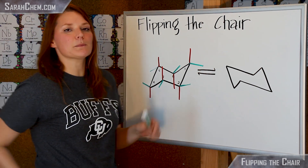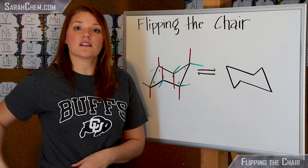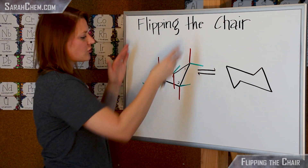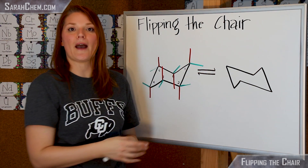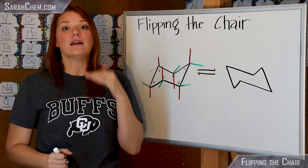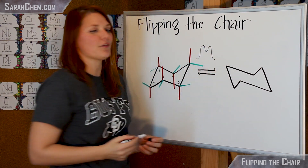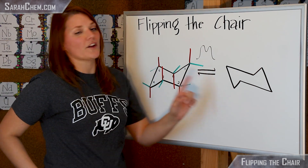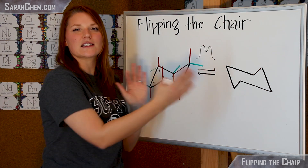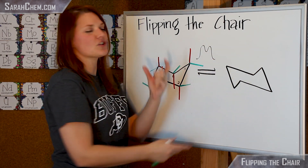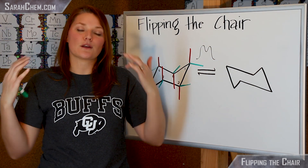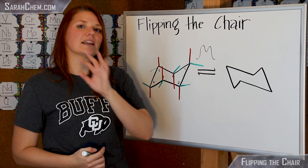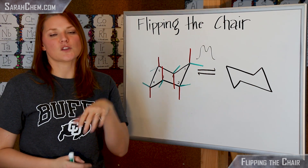These bonds are single bonds, which means there is rotation around them. It's just that in a cyclic compound, those rotations have ramifications in terms of the kind of conformer you have. The rotation isn't totally free — there is an energy barrier that has to be overcome to get from one chair to another. If these were all hydrogens, it's a pretty equitable amount of one chair versus the other, but if you have a really big bulky group, you could have a strong preference for one chair over the other.